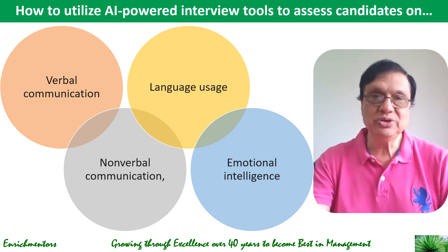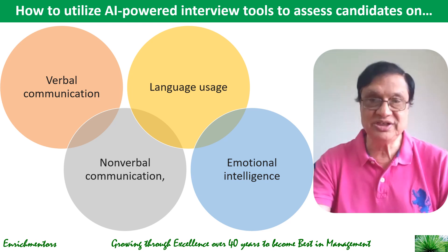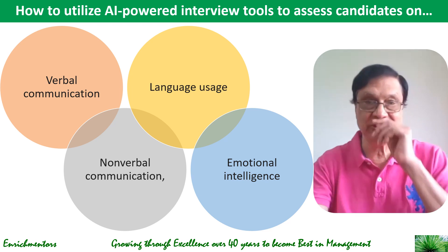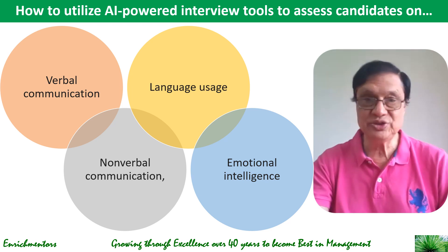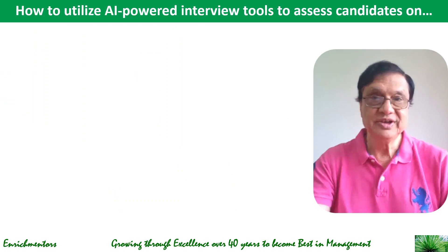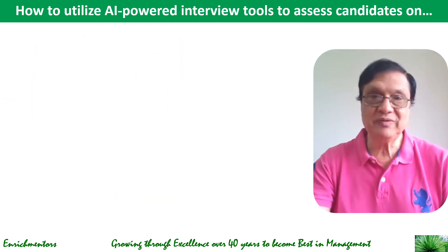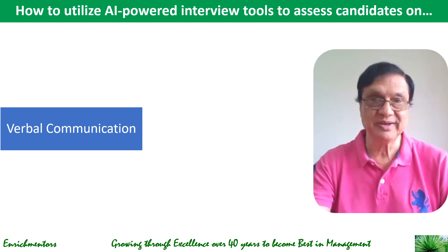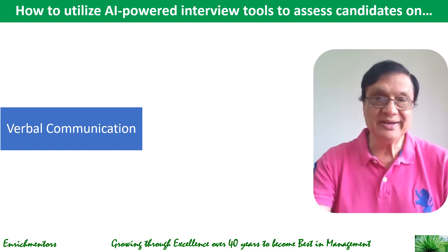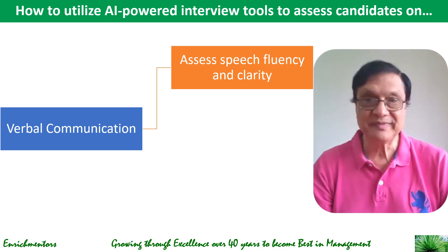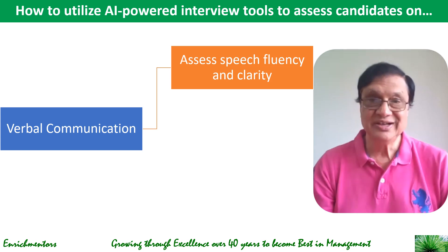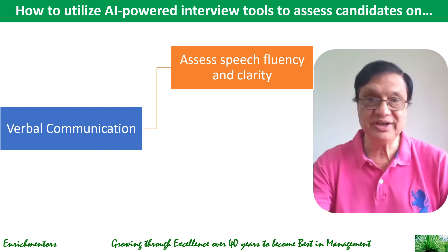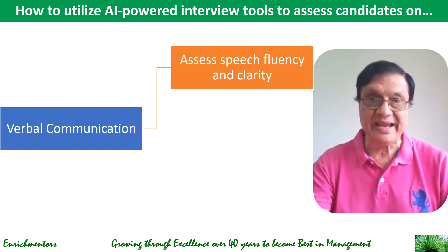The question is how to utilize AI powered interview tools to assess candidates on four areas: verbal communication, non-verbal communication, language usage, and emotional intelligence. There are many ways to utilize AI powered interview tools to assess these four things. Starting with verbal communication, you can assess speech fluency and clarity. AI can analyze the candidate's speech rate, pauses, and use of filler words to assess fluency and clarity of communication, helping identify candidates who can articulate their thoughts clearly and concisely.